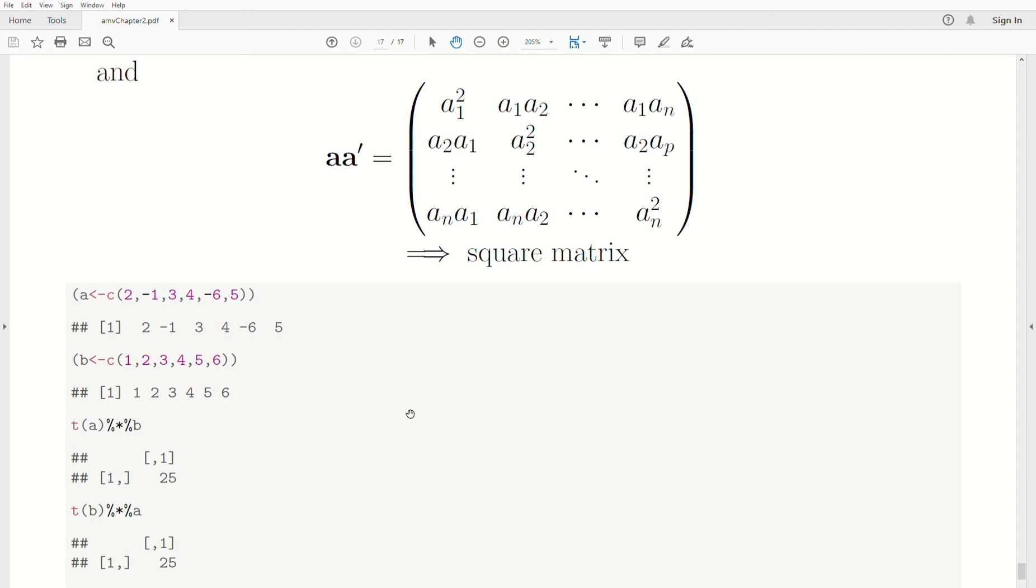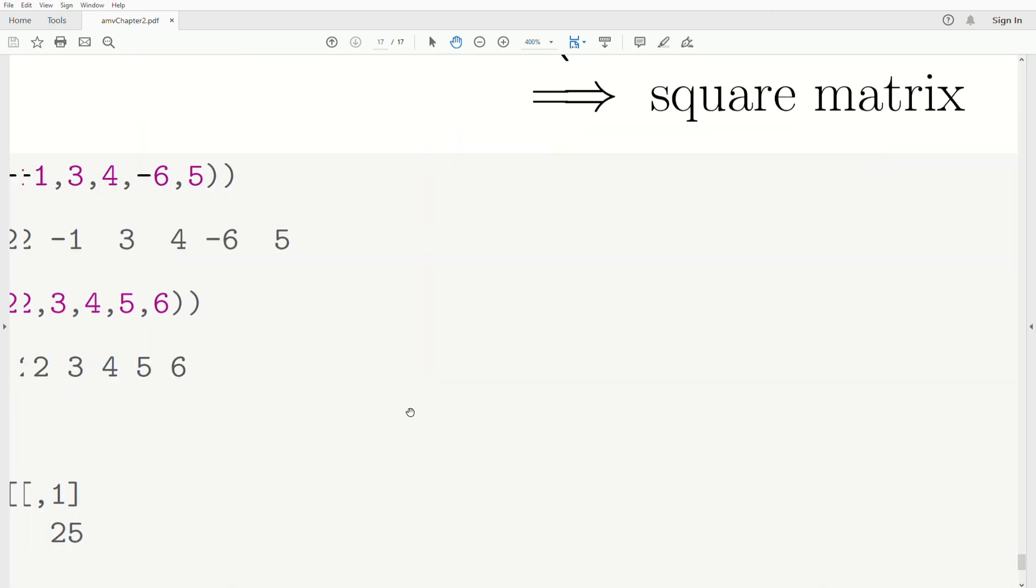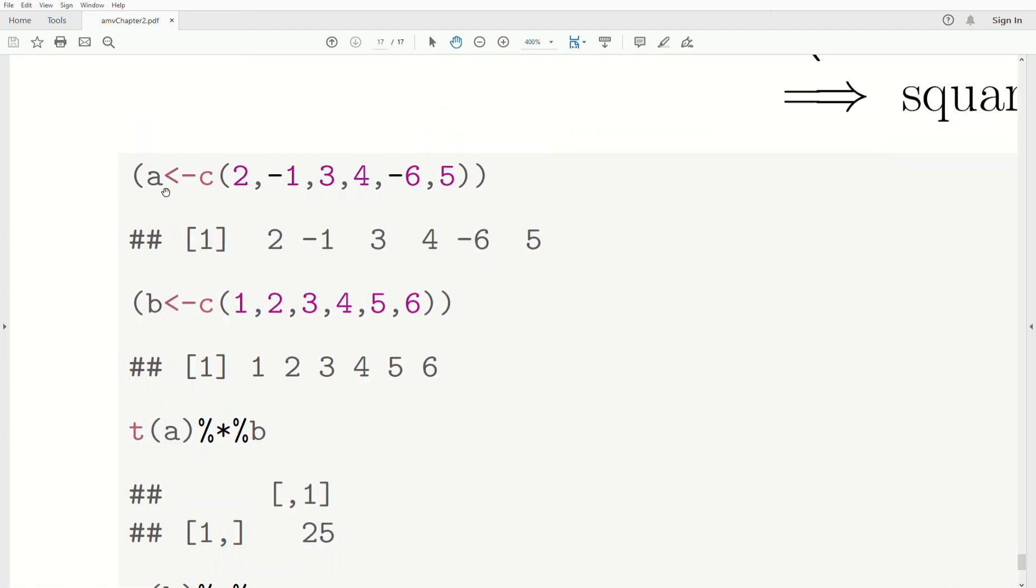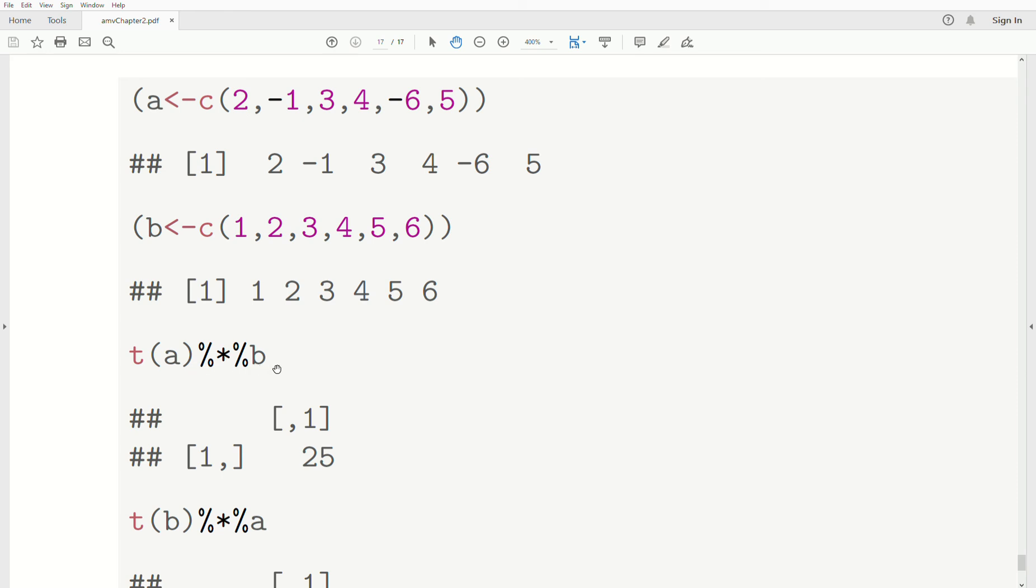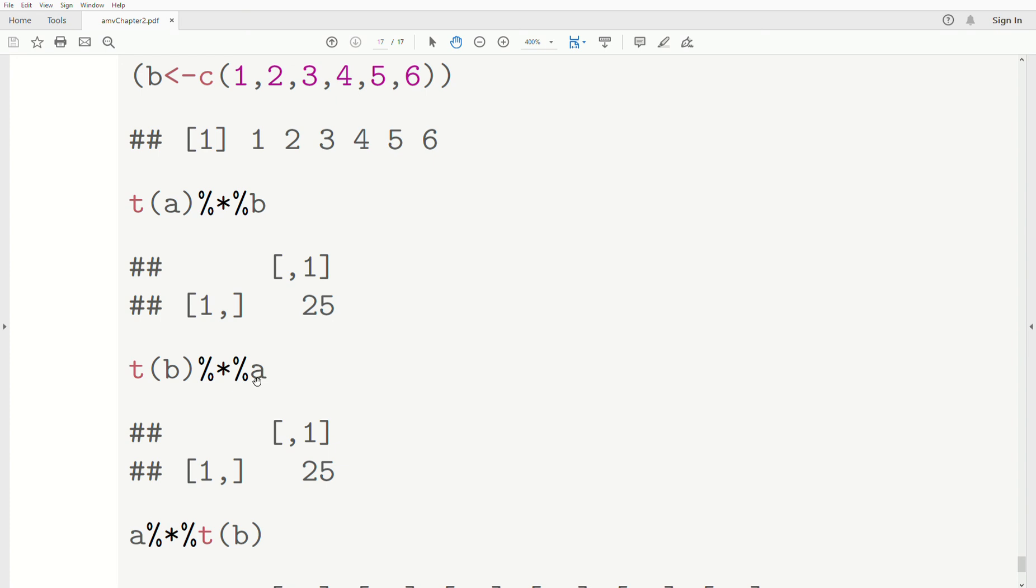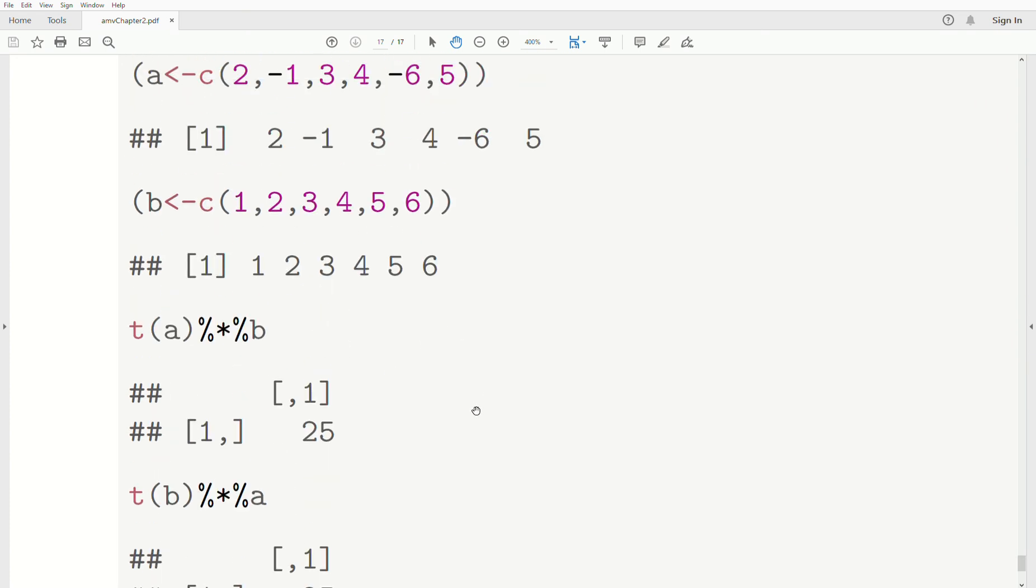And to do this in R, you do this. So we have a vector A and a vector B, and we take A transpose B, so that's going to be a number. But that's also the same as B transpose A, right? The same number.